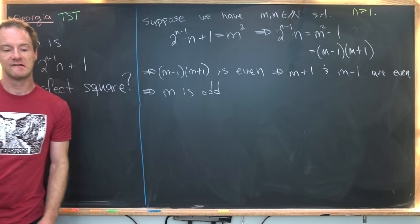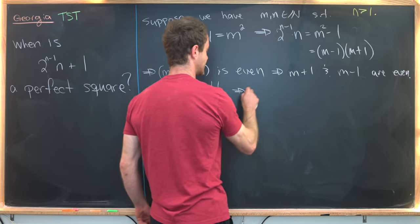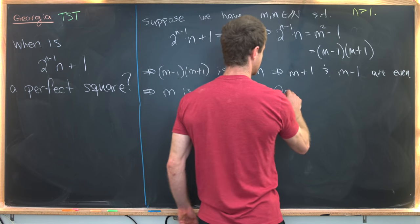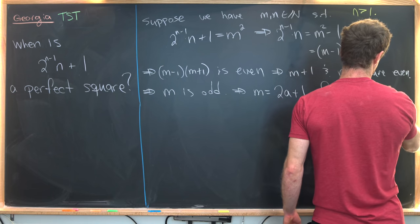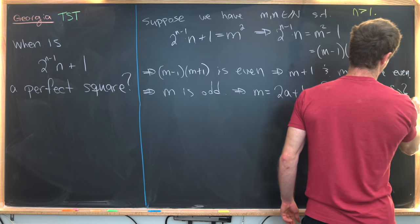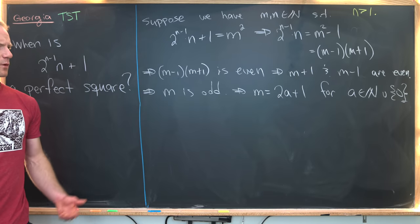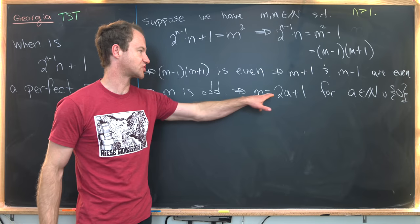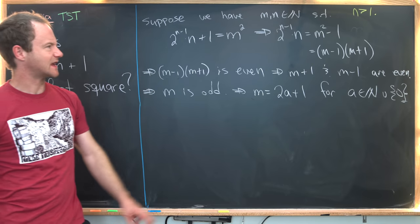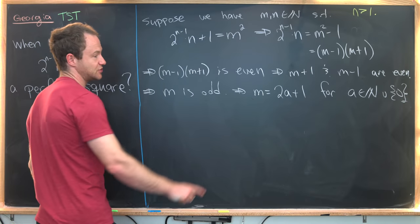So let's see where we can go from there. The fact that m is odd means we can write m as 2a + 1 for a being some natural number, possibly with the inclusion of 0. Now, where could we go from there? Well, maybe we would plug this version of m back into our original setup way back here.